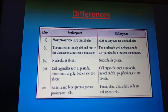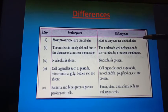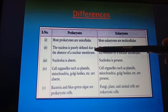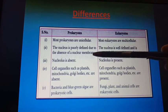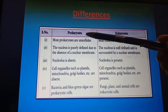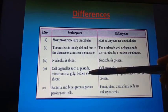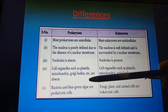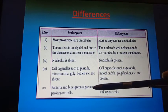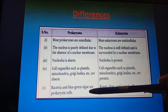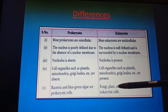The difference between prokaryotes and eukaryotes: most prokaryotes are unicellular; most eukaryotes are multicellular. In prokaryotes, the nucleus is poorly defined due to the absence of a nuclear membrane; in eukaryotes, the nucleus is well-defined and surrounded by a nuclear membrane. Nucleolus is absent in prokaryotes and present in eukaryotes. Cell organelles such as plastids, mitochondria, and Golgi bodies are absent in prokaryotes but present in eukaryotes. Examples of prokaryotes: bacteria and blue-green algae. Examples of eukaryotes: fungi, plant cells, and animal cells.